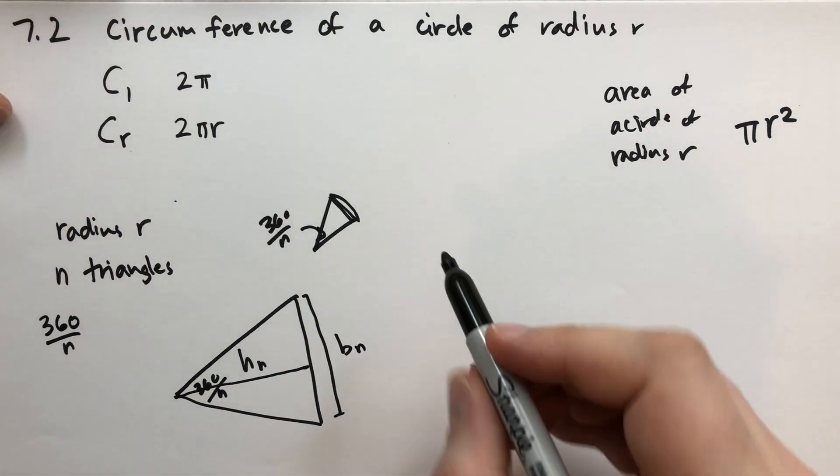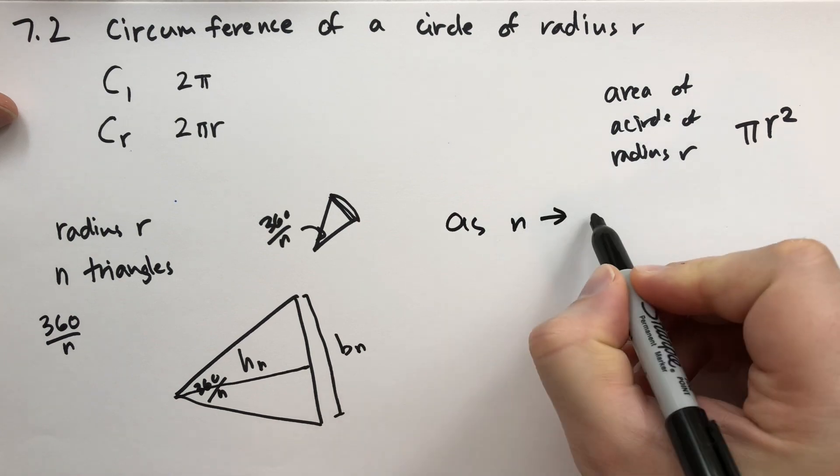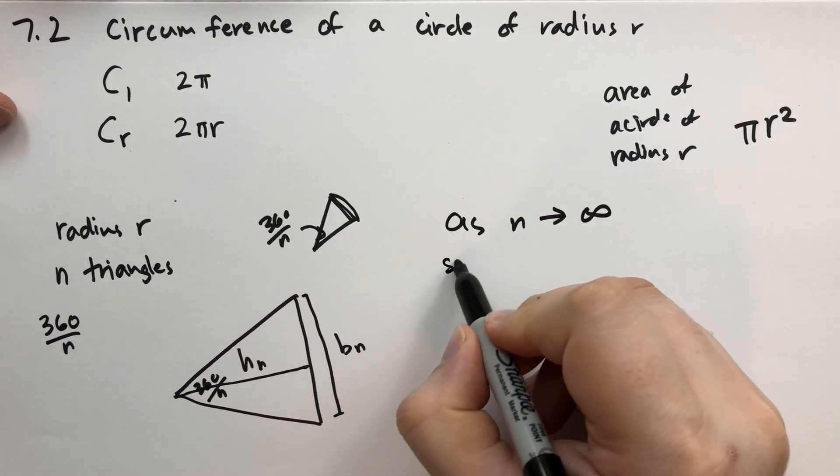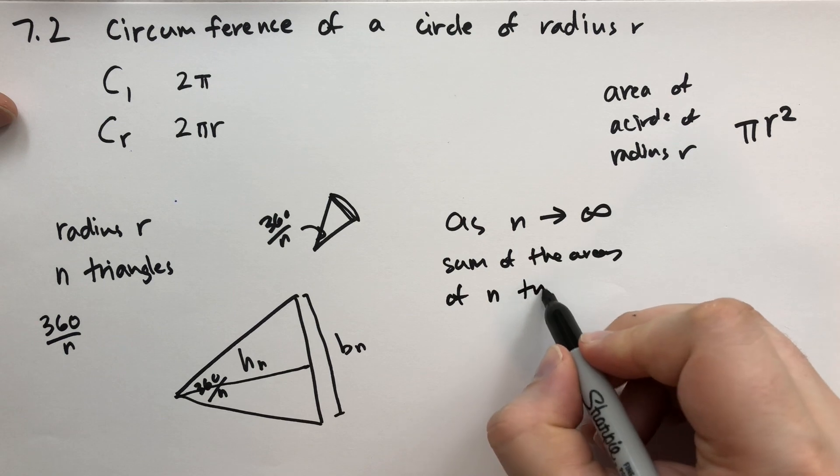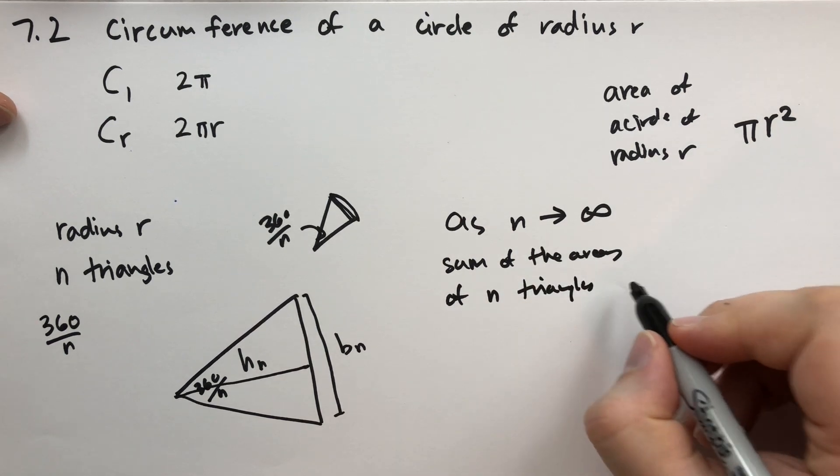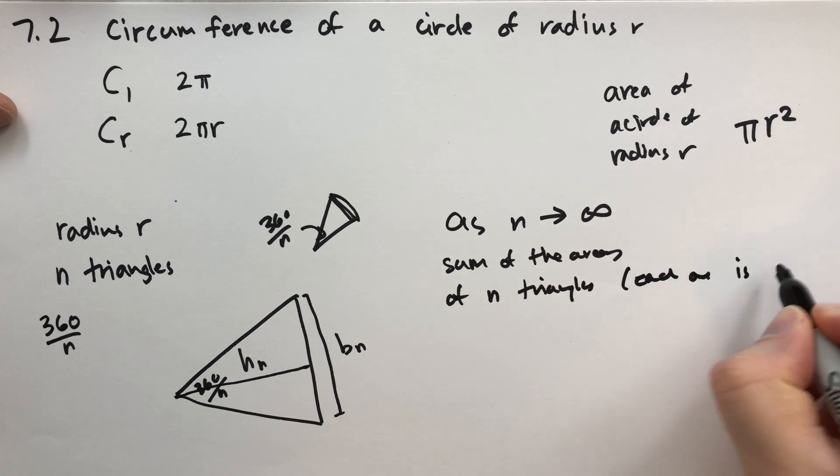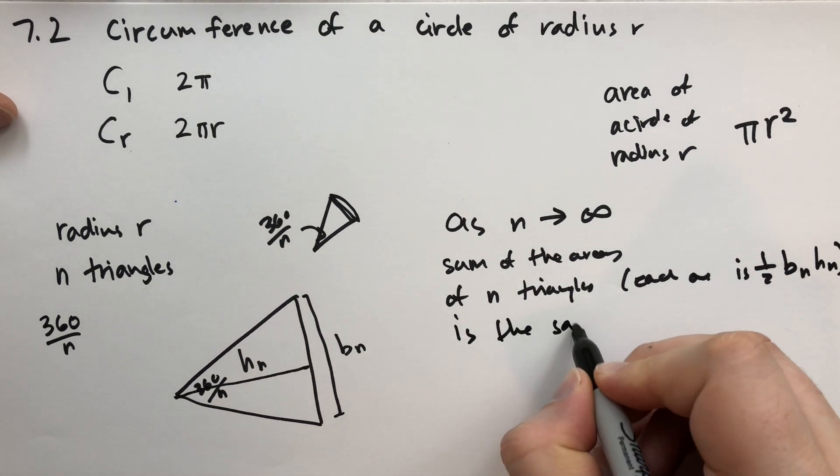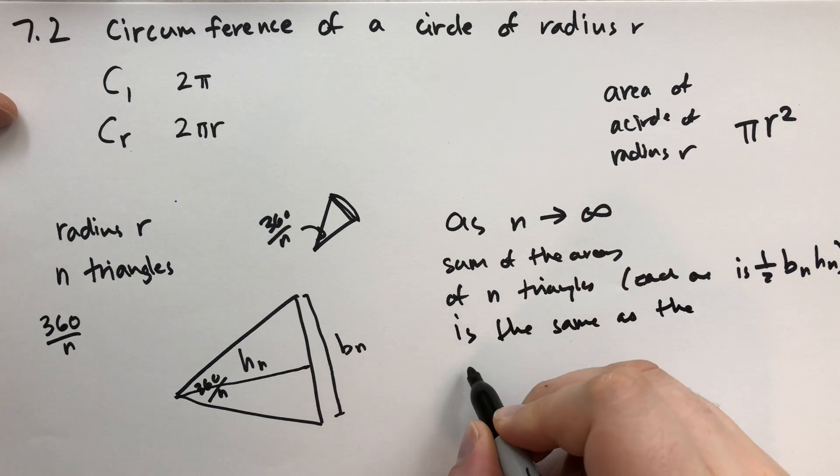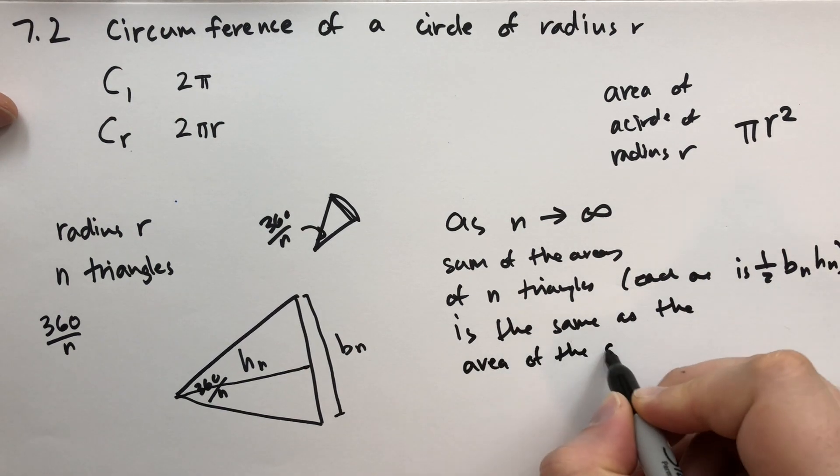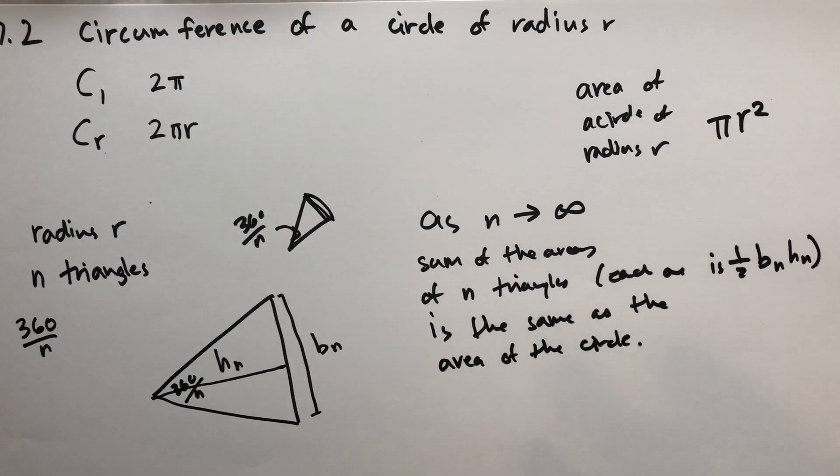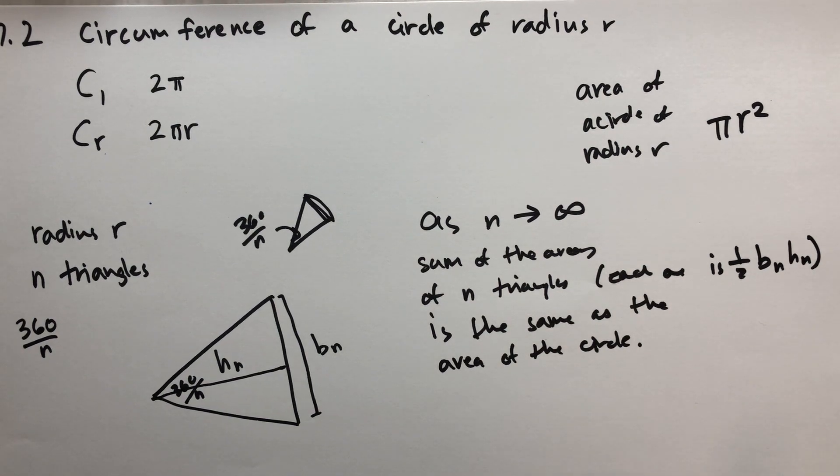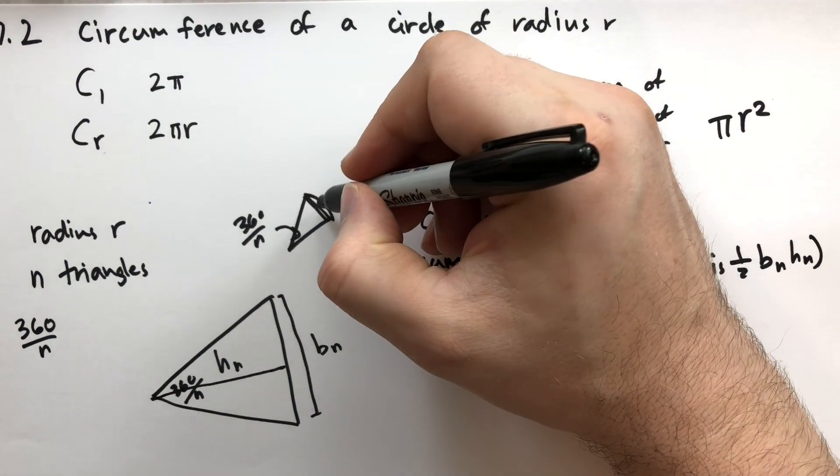We're going to say that as n approaches infinity, that the sum of the areas of n triangles, which each one is one half the base b_n times the height h_n, is the same as the area of the circle. We're just going to say that. This is the calculus bit. It should be hard to convince yourself that this is true. As you draw more and more triangles inside that pizza, you're going to lose less and less of the pizza to the crust.